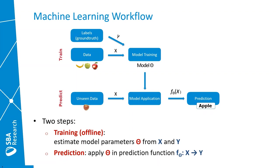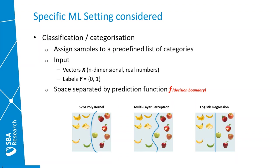Here we want to predict what type of fruit a certain sample belongs to. In this talk we specifically consider the classification or categorization machine learning paradigm. In this task we want to assign to input samples one or more classes from a predefined list of categories. So we have as input data n-dimensional real-valued vectors x and the output is one of a list of labels. In our case we have a binary classification task of classifying fruits either as bananas or apples.